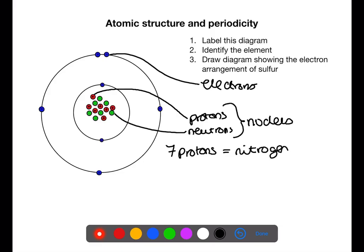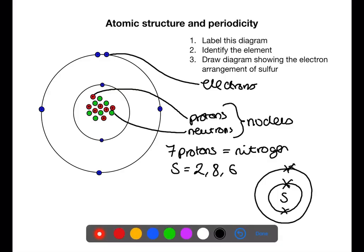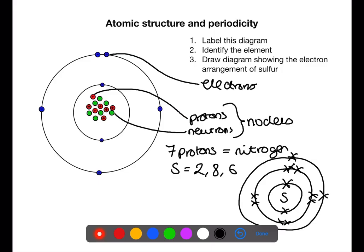That's the atomic number which identifies the atom, and if we look up number seven on the periodic table we'll find that that is nitrogen. We're also to draw a diagram to show the electron arrangement for sulfur. Sulfur has an electron arrangement of 2, 8, 6. So we have sulfur in the center, then the first shell with two electrons, second shell with eight electrons, and then third shell with six electrons. Remember that they will fill singly before they will pair up.